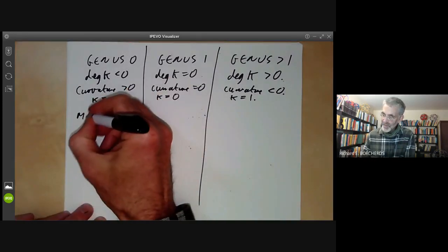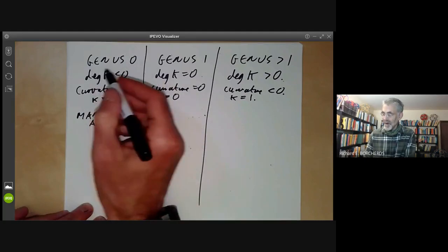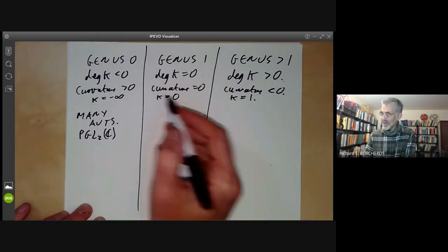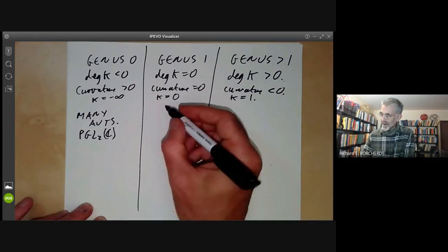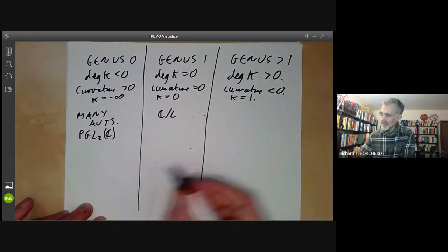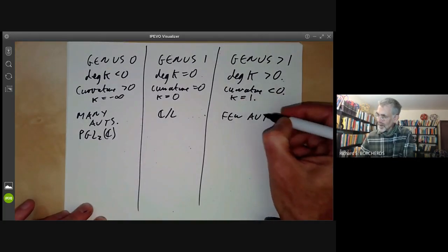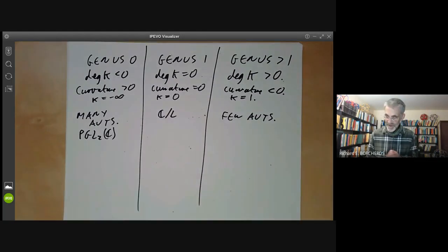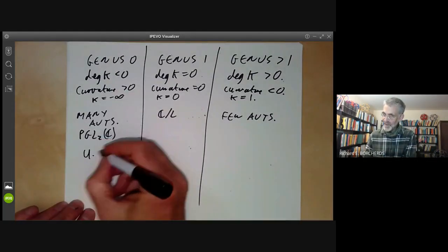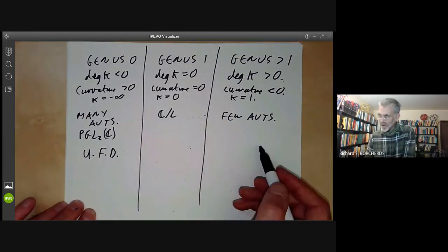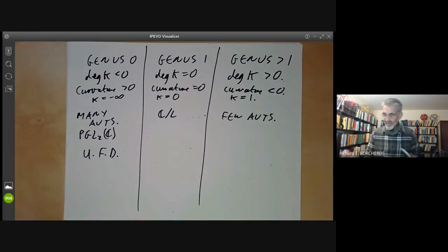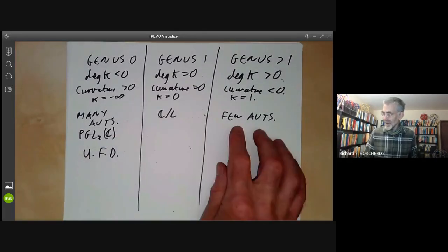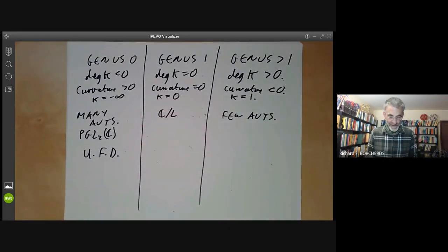Genus zero also has many automorphisms: the projective line is acted on by PGL₂(ℂ). Genus one also has quite a lot of automorphisms because it can be written as ℂ/L, which is a group acting on itself. For genus greater than one, there are few automorphisms — the automorphism group of a typical curve of genus greater than one has just one element, and in general it is always finite. Genus zero curves tend to be unique factorization domains, while genus one and genus greater than one are usually not. So genus zero Riemann surfaces are really quite unlike the curves of higher genus.